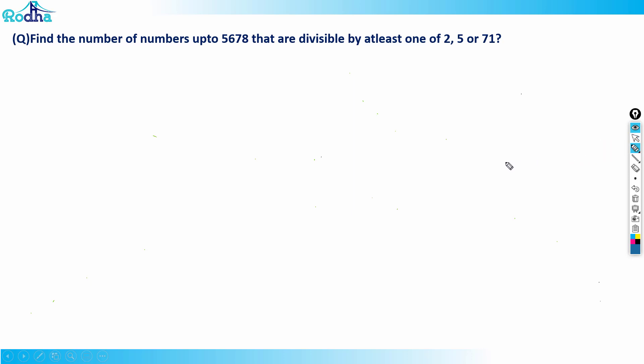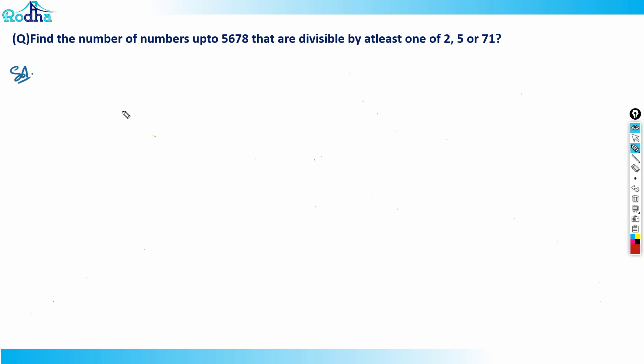Let's look at this question: find the number of numbers up to 5678 that are divisible by at least one of 2, 5, or 71. This is a good question and a good application of Euler's totient function.